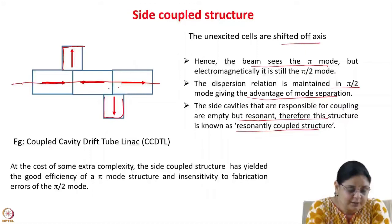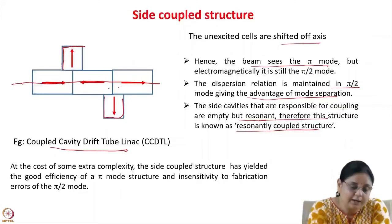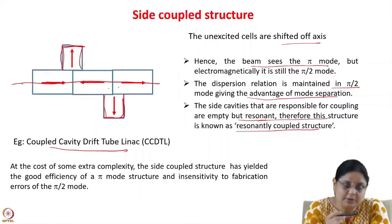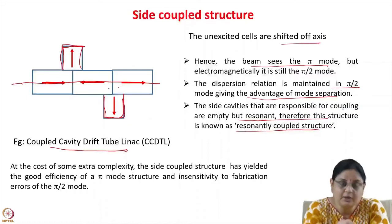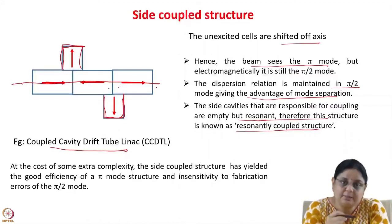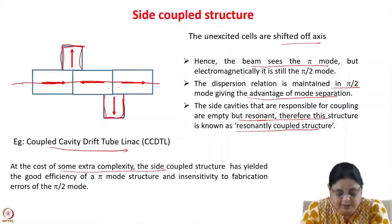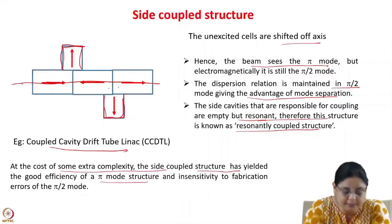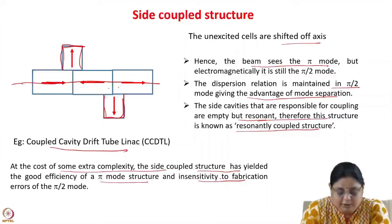The dispersion relation is maintained in π/2 mode, giving the advantage of mode separation and looser fabrication tolerances. The side cavities responsible for coupling are empty but resonant, so the structure is known as a resonantly coupled structure. An example is the coupled cavity drift tube linac (CCDTL): it has a drift tube linac with coupling cavities off the beam axis. Electromagnetically it is a π/2 mode structure, whereas the beam sees a π mode structure — combining the efficiency of π and the stability of π/2.